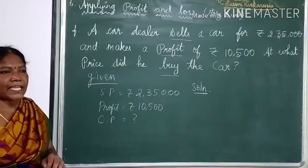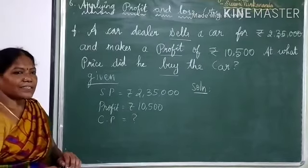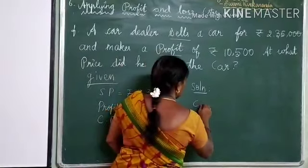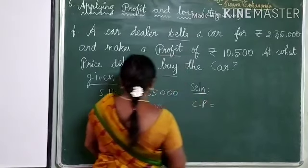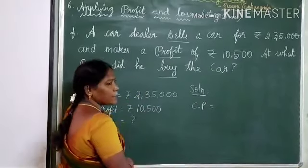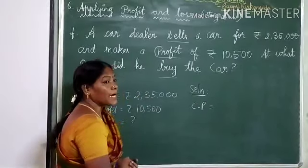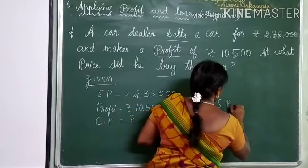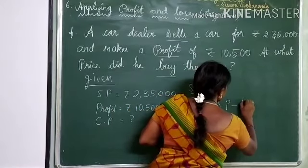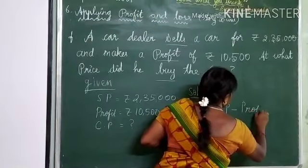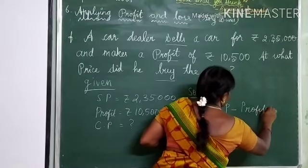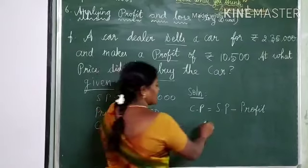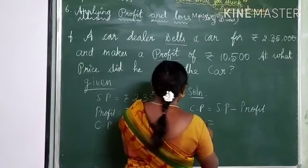Anyone, get up and say the formula. Very good! Cost price is equal to selling price minus profit. So selling price minus profit gives us the cost price.